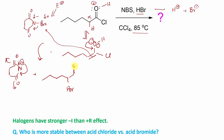I have already discussed many related lectures; I shall provide some links in the description box and the i-button — please check. This proton will be removed and ultimately it will produce the alpha-bromo acid chloride. And where will this proton go? Obviously, the N-minus will abstract this proton, and this will produce succinimide. So this is the overall reaction.